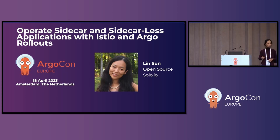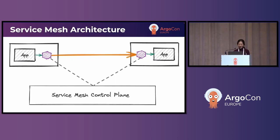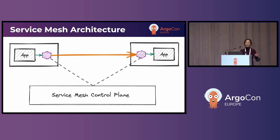How many of you heard of Solo.io? A lot of you — thank you, awesome. So how many of you know Istio service mesh architecture? I don't need to explain the slides because you guys know we have sidecar architecture. The control plane is programming the sidecar to do intelligent things such as policies.